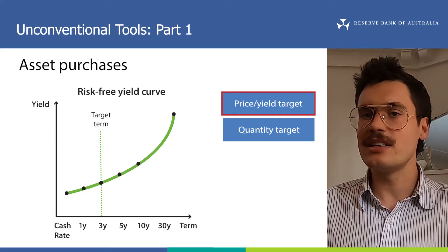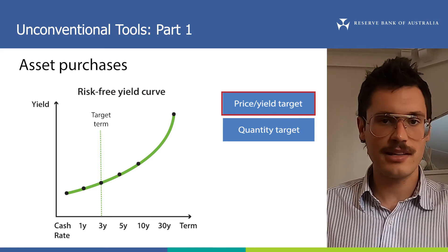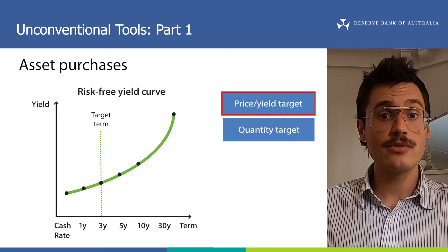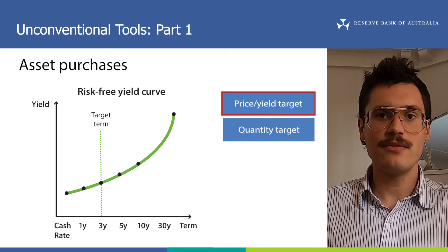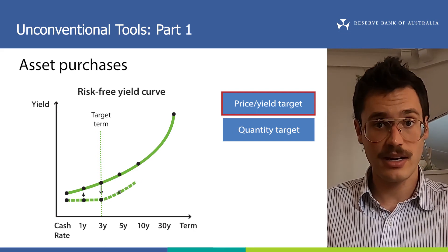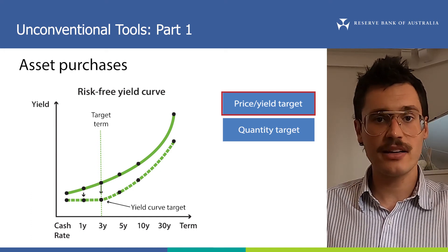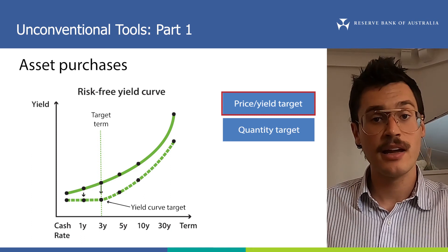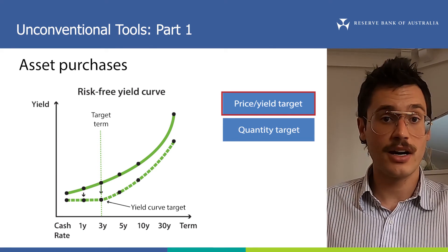The key is being committed to purchasing these bonds in whatever quantity is necessary to meet the target. Similar to forward guidance, a price target is also expected to change the shape of the yield curve. If the price target is set at the same value as the target for the cash rate, then the yield curve could be expected to flatten between the cash rate and the targeted part of the yield curve, as shown in the chart. In Australia, the yield target is coordinated to have the same timing as the RBA's forward guidance, which means it has a similar impact on the yield curve and in fact reinforces the RBA's forward guidance.